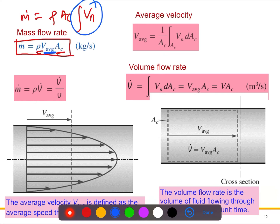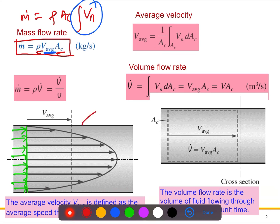Looking at the cross-sectional view schematically: initially, at the start of the flow, all fluid particles have the same magnitude. But once the fluid starts moving, the pipe wall is rigid and not moving — this is the no-slip condition, meaning velocity at the wall is zero. Due to the no-slip condition, fluid particles near the wall obtain a lower velocity compared to particles further away, causing the velocity profile to develop.